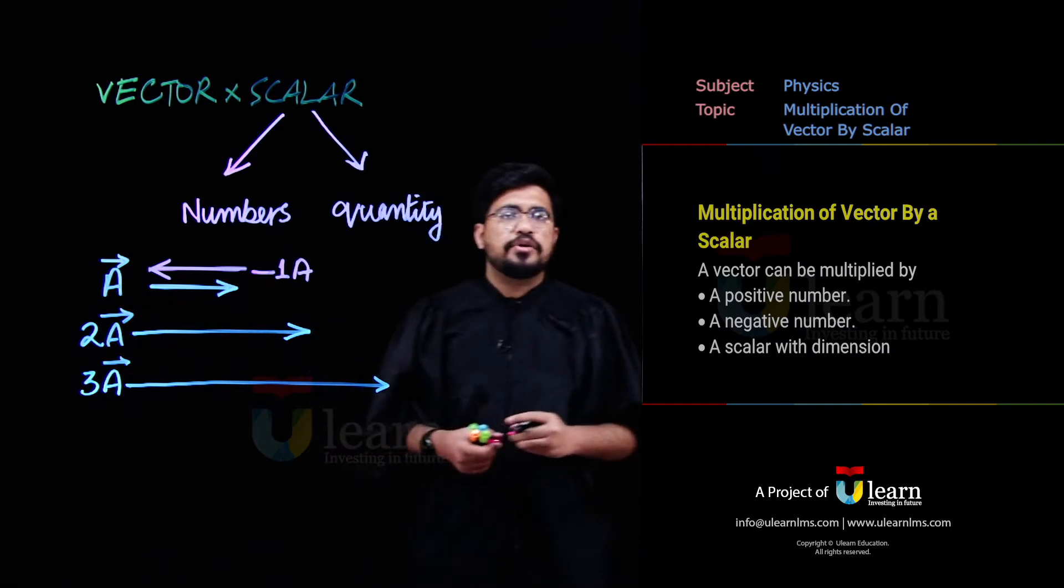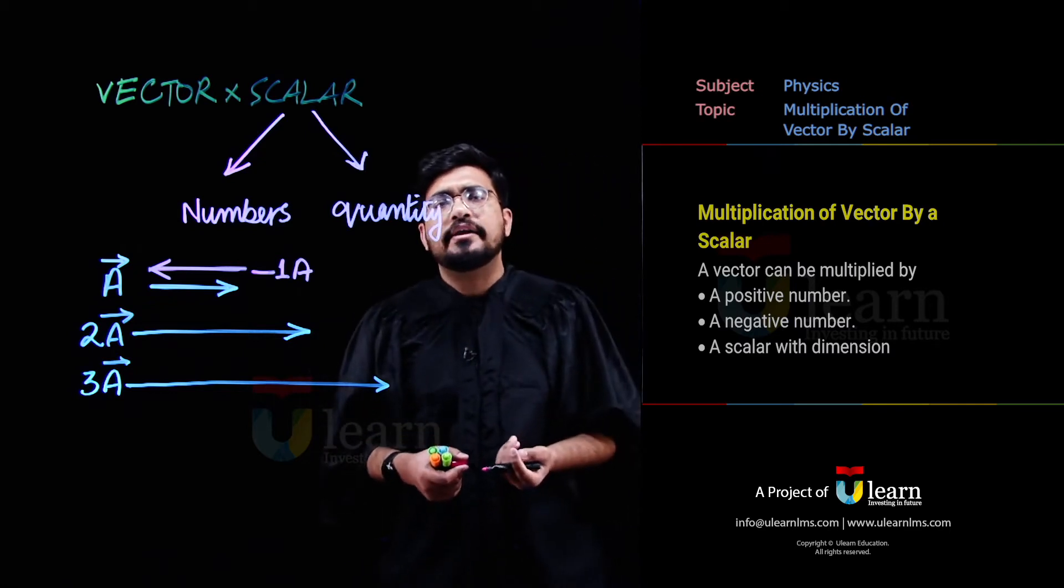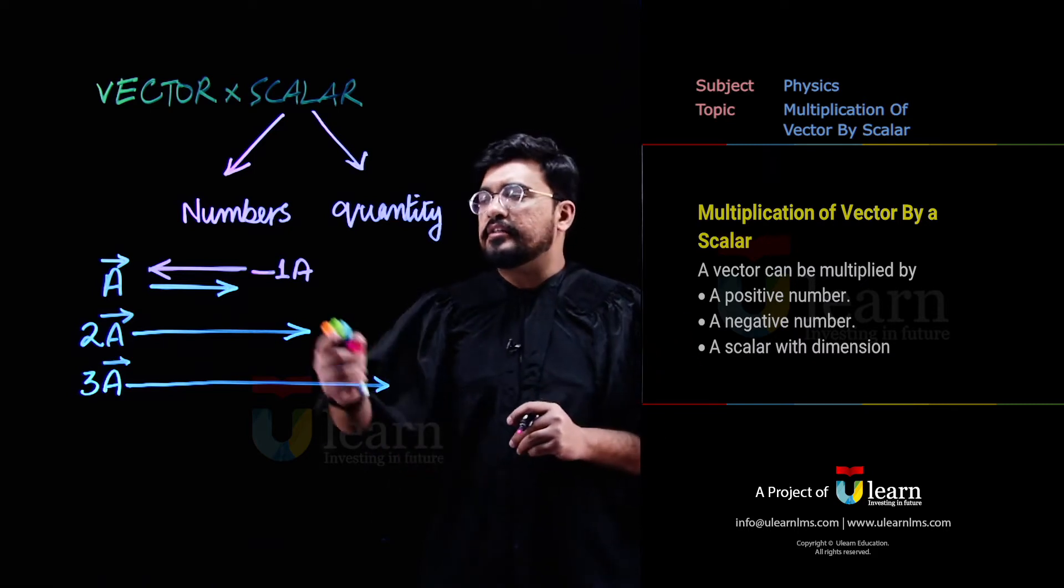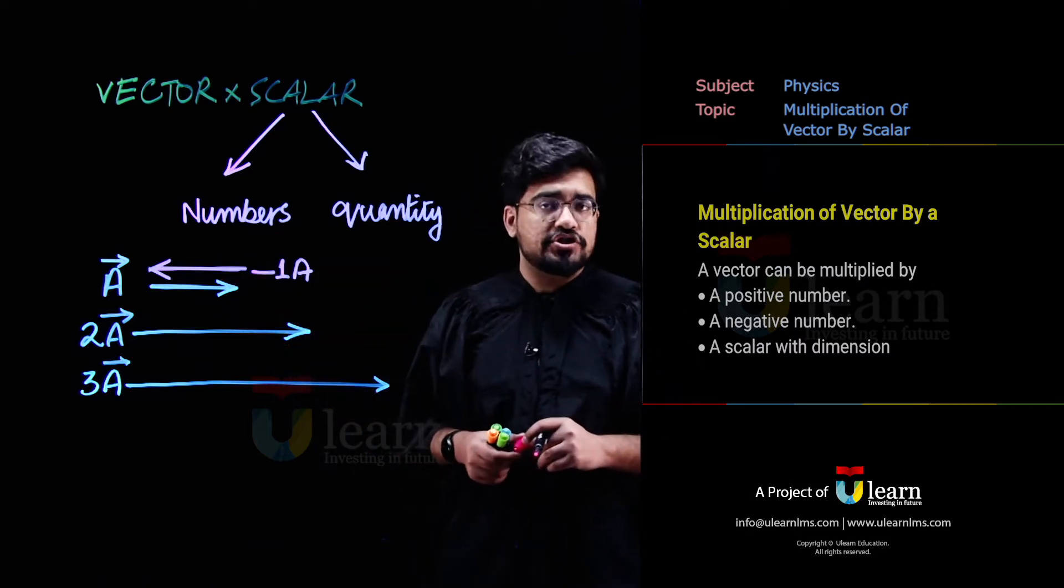Magnitude pe fark nahi padega, kyunki aap ne 1 se multiply kiya. One is multiplicative identity. One magnitude pe fark nahi dalta. Lekin ye negative sign ne uski direction ko reverse kar deeta.